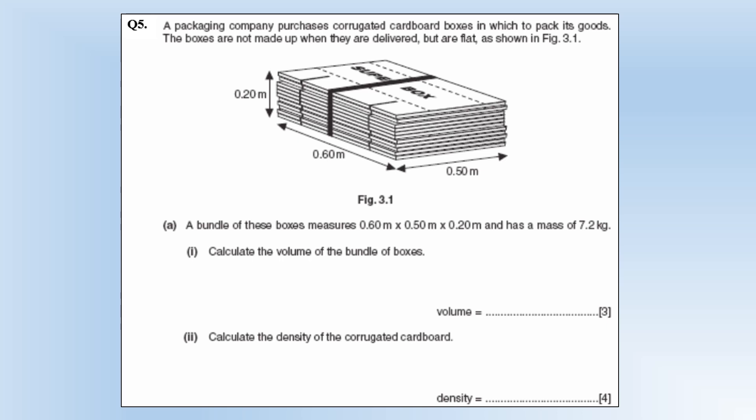So a packaging company purchased corrugated cardboard boxes in which to pack its goods. The boxes are not made up when they are delivered but are flat as shown in the diagram. A bundle of these boxes measures we've got these dimensions and it has a mass of 7.2. Calculate the volume well it's a cuboid so we can just multiply the dimensions together